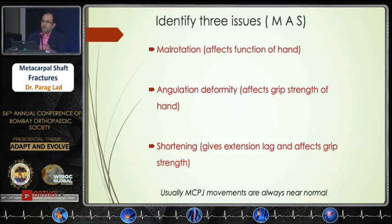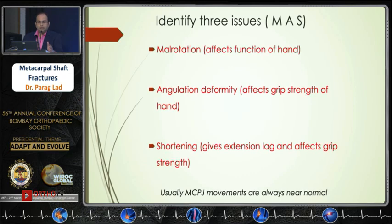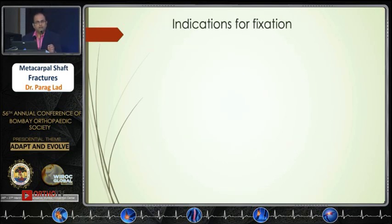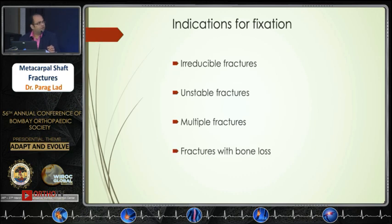Usually, even if they malunite or go into nonunion, the metacarpophalangeal joint movements are usually preserved, and that's why — except for these three problems — some patients do not opt for surgical intervention. The absolute indications for these fractures are: irreducible fractures, unstable fractures, multiple fractures, fractures with bone loss, and open fractures.